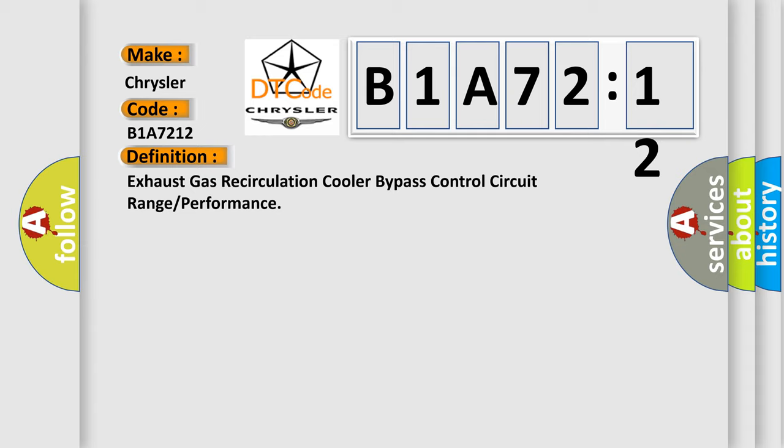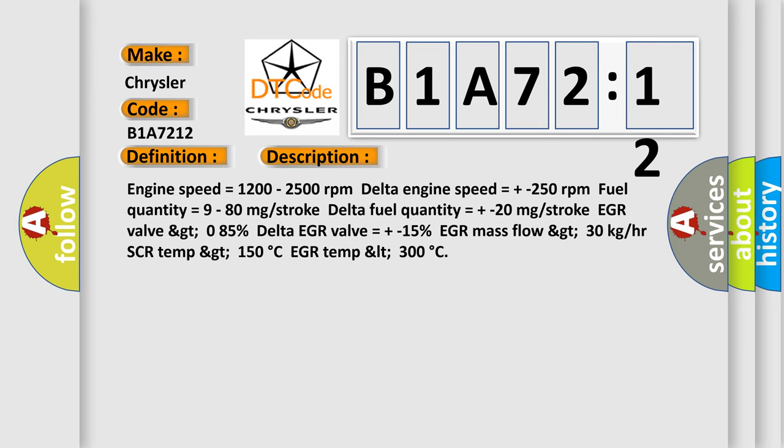And now this is a short description of this DTC code. Engine speed equals 1,200 to 2,500 revolutions per minute, delta engine speed equals plus minus 250 revolutions per minute, fuel quantity equals 9 to 80 mg stroke, delta fuel quantity equals plus minus 20 mg stroke, EGR valve GT 0.85%, delta EGR valve equals plus minus 15%, EGR mass flow GT 30 kg.